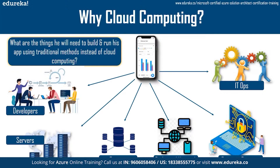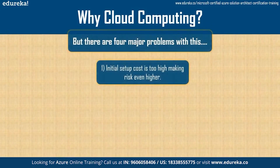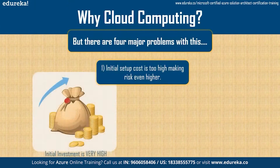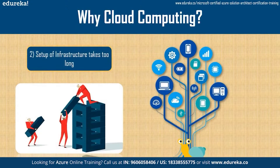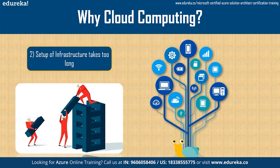John figured there would be four major problems with this setup. The first problem is that owning his own infrastructure would require a huge amount of money, and because of the huge investment in setup, this would greatly increase the risk if the app fails. The second problem is that the infrastructure would take too long to set up — he would have to buy all the components, then hire IT technicians to install and connect everything. So that means more money and more time.